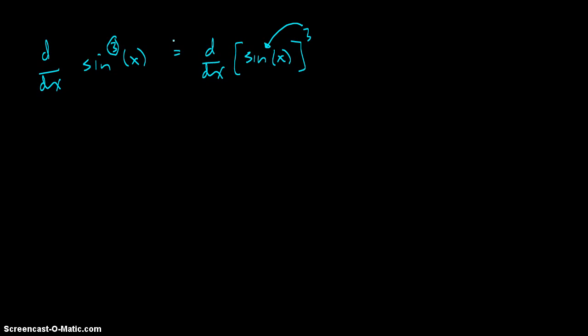However, with the brackets and this slightly more clunky expression, it's more visually obvious that we have a composition with the sine of x as the inside and the third power as the outside. It's the sine of x inside and being raised to the third power.